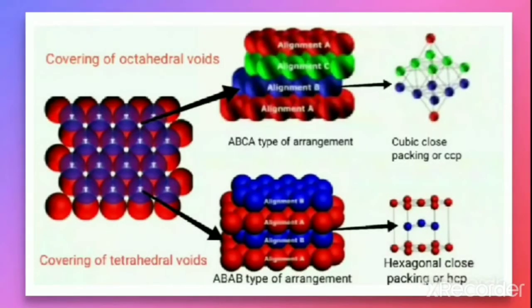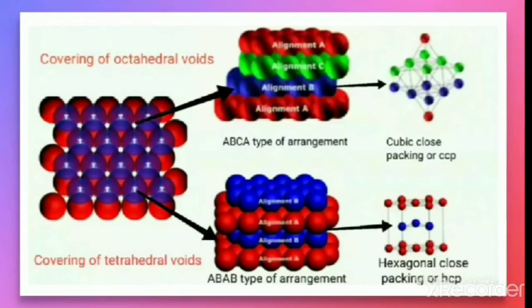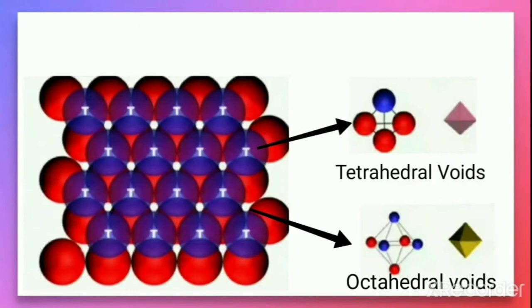In the previous video we learned that when the particles are close-packed, resulting either in the CCP or HCP structures as shown in the figure. An A-B-A-B type of arrangement gives HCP packing, and an A-B-C-A type of arrangement gives CCP arrangement. Because of this type of arrangement, two types of voids are generated: tetrahedral voids and octahedral voids, as shown in the figure which we already discussed in the previous video.